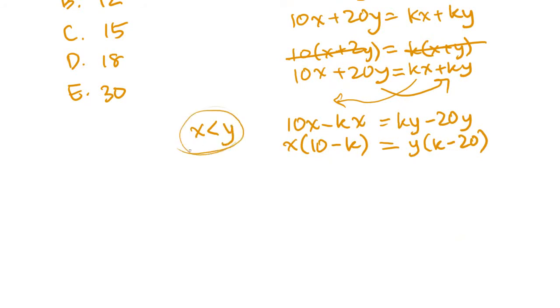Remember, I'm going to rewrite this down here, but x is less than y. They gave us this, so that's not under dispute. If x is less than y, then 10 minus k must be greater than k minus 20, because whatever they multiply together is going to be equal. So if y is a bigger number, it's got to be multiplied by a smaller number.